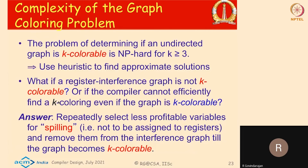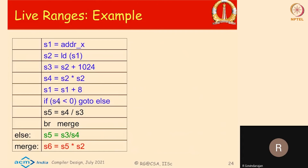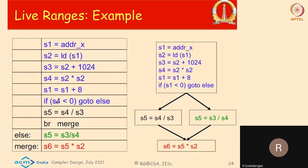Chaitin came up with a clever algorithm for doing this, which we will talk about next. But first, let's see an example of live ranges and the interference graph. This example has four basic blocks in different colored fonts: the first basic block has about six instructions, then a then-block and an else-block each with one instruction, and a merge block with one instruction. We have temporaries S1, S2, S3, S4, S5, and S6.